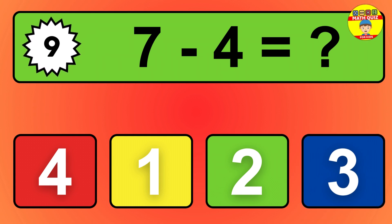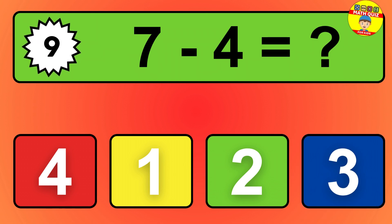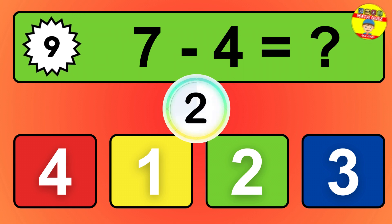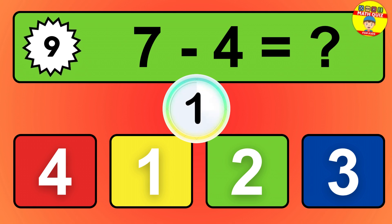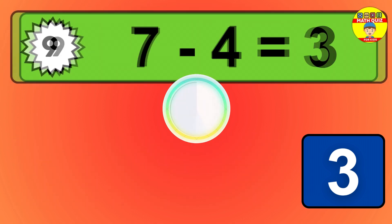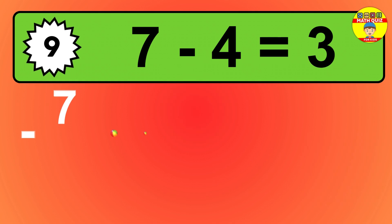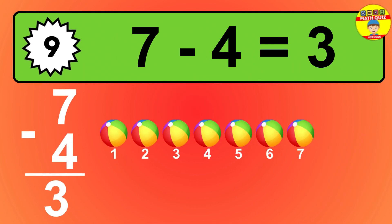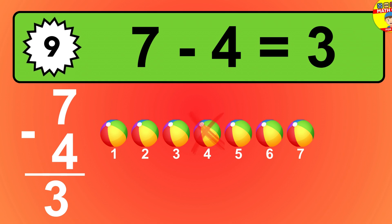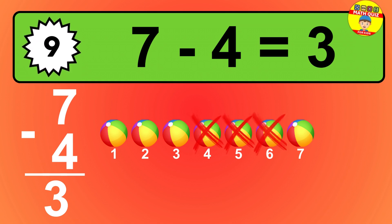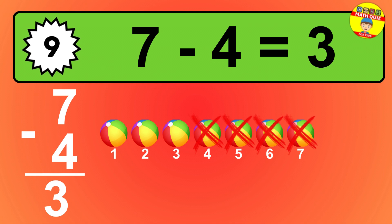Question 9. 7 minus 4 equals what? So the answer is 7 minus 4 is 3. Let's count it. 1, 2, 3.